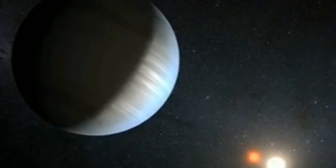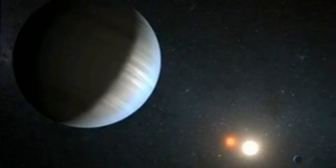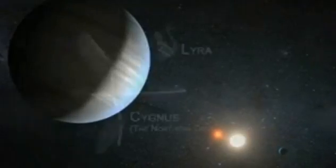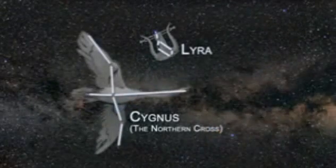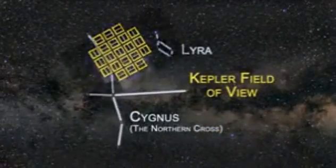Planets orbiting a pair of stars, or as astronomers call it, a circumbinary system, located in the constellation of Cygnus about 4,900 light years from Earth. The discovery of Kepler 47 proves that more than one planet can form and persist while orbiting two stars.